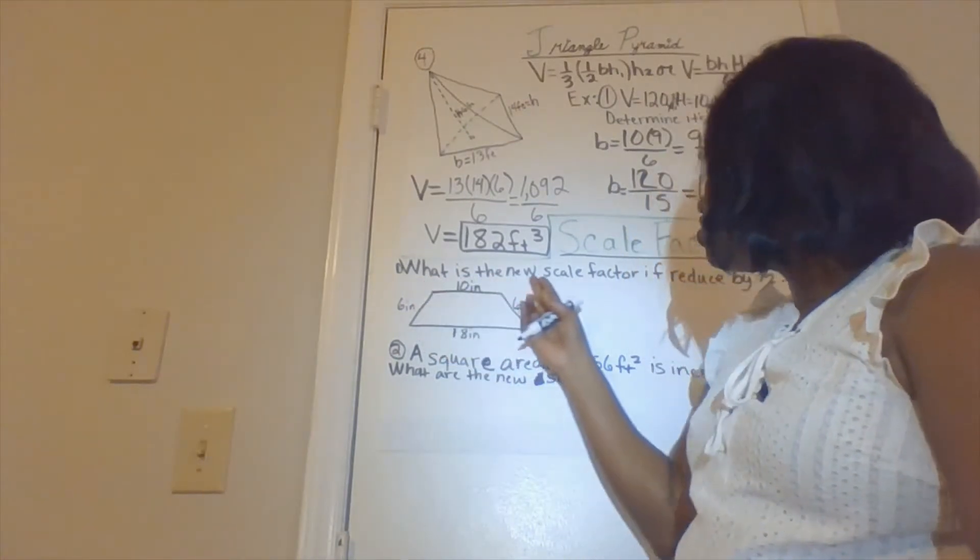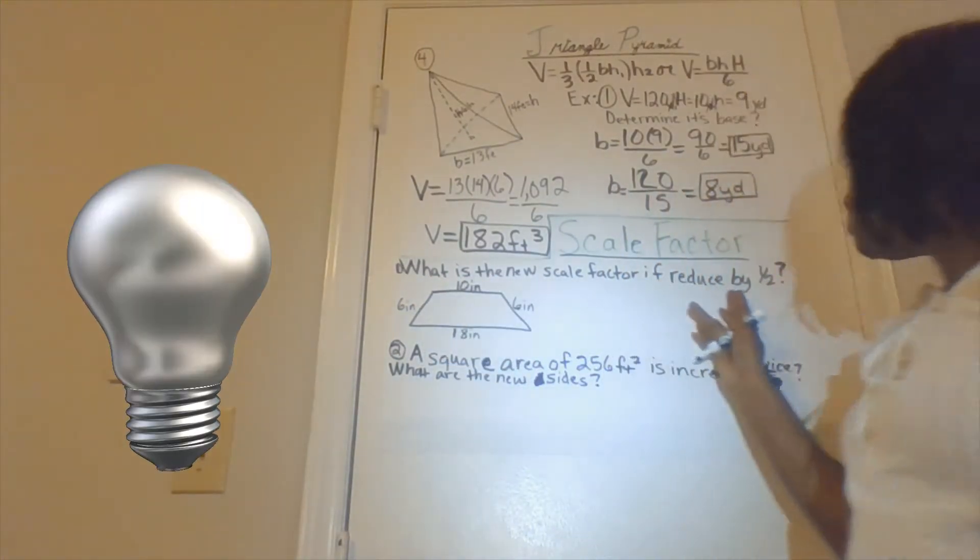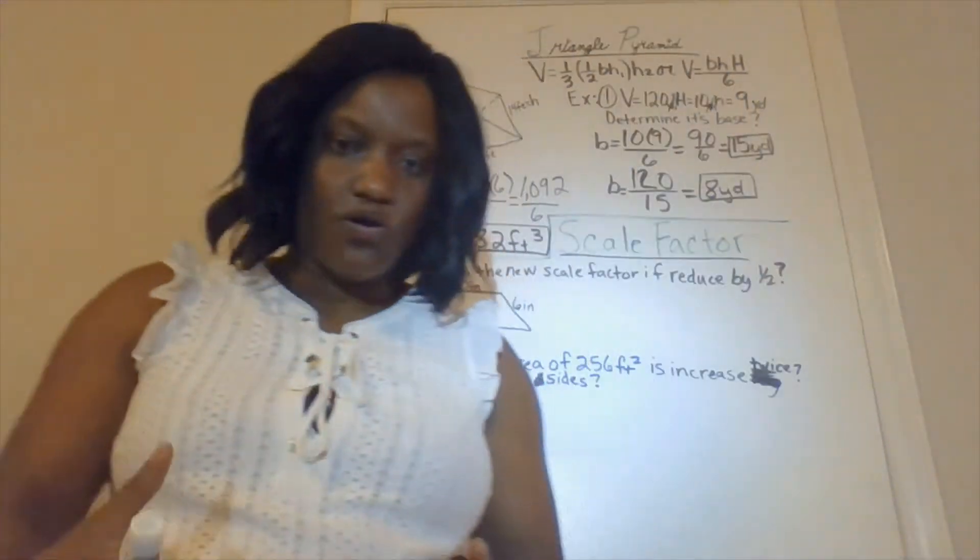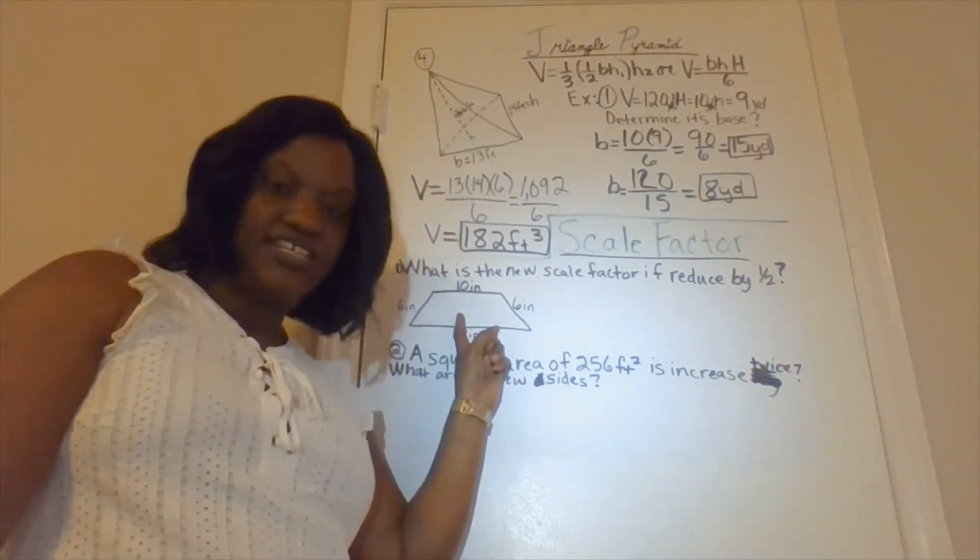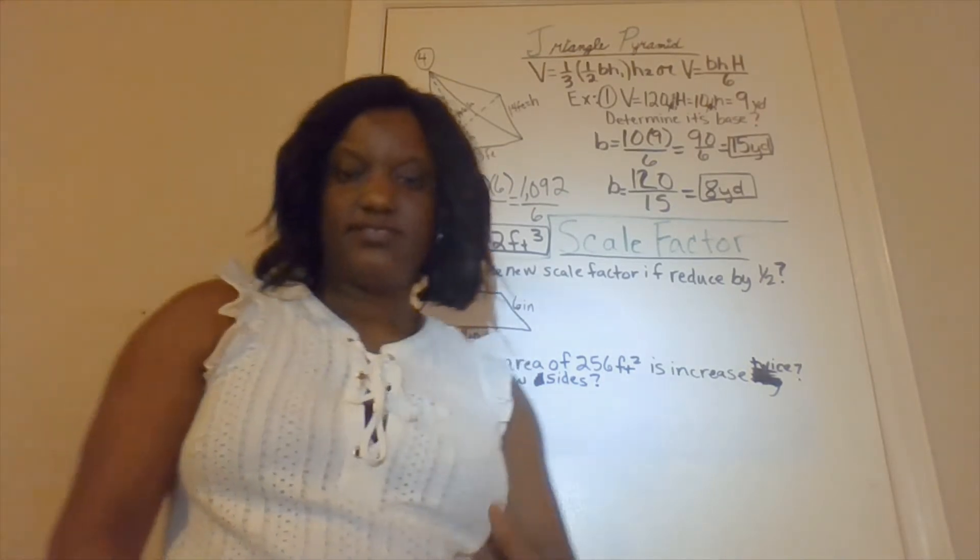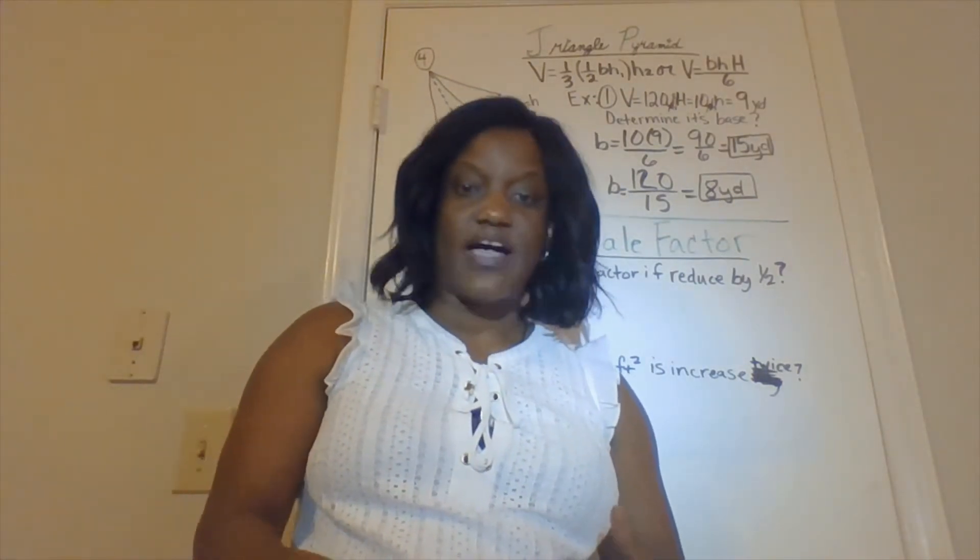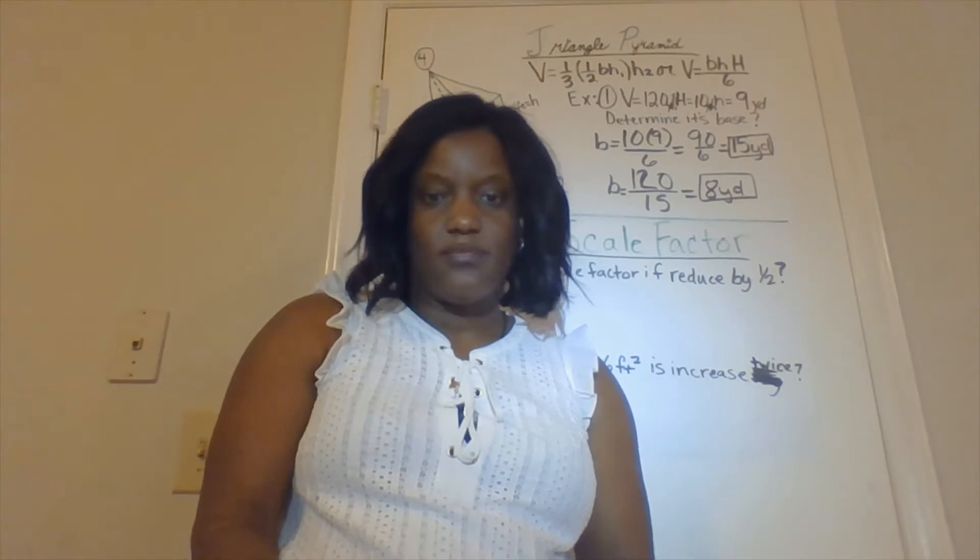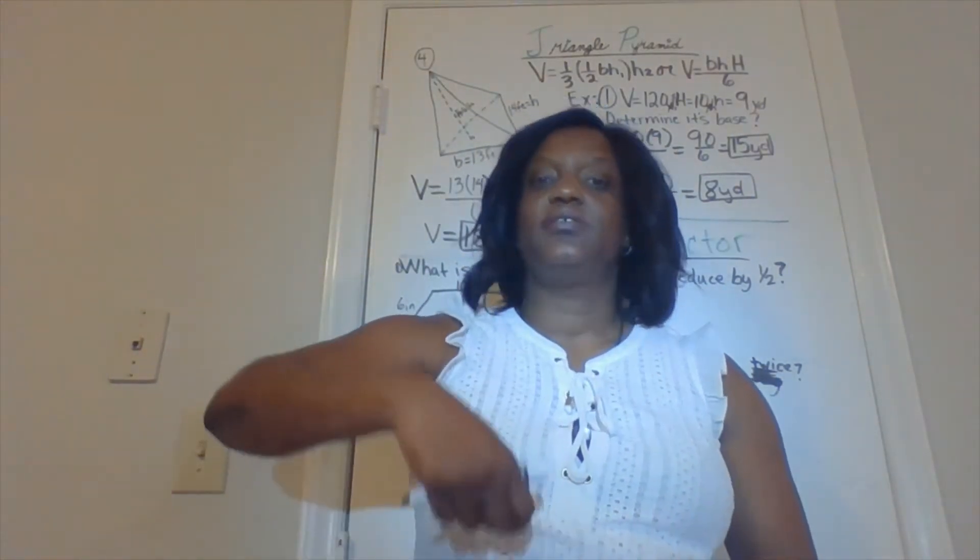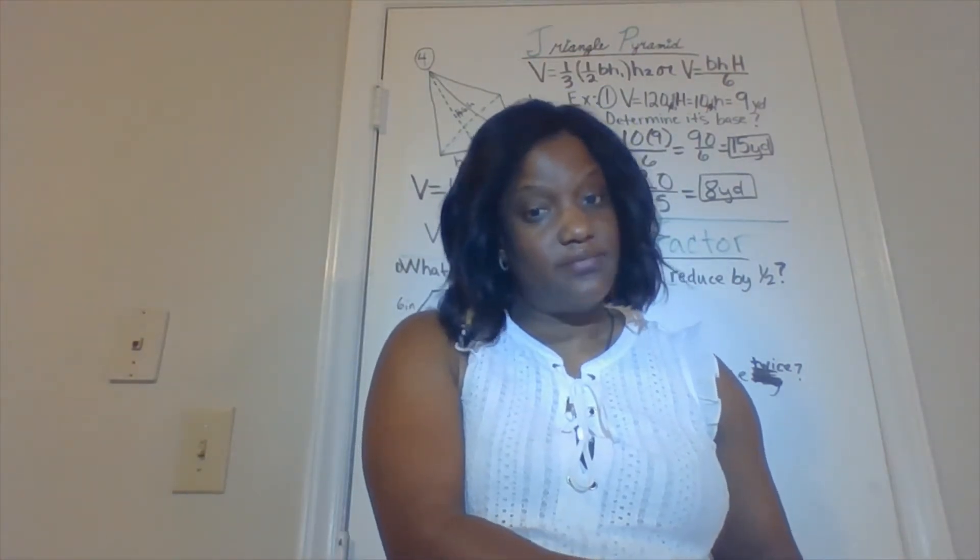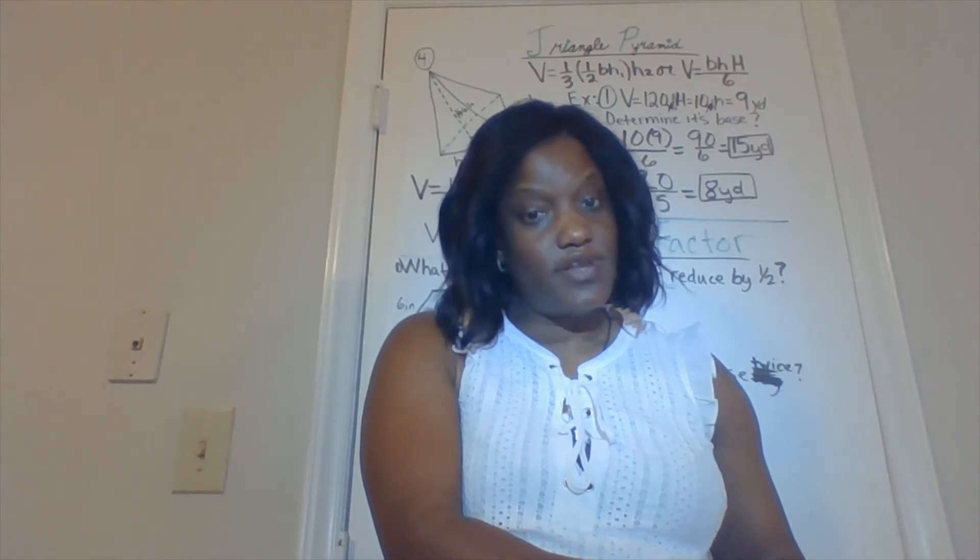Now it says what is the new scale factor if reduced by a half? So if my dimensions are 10, 18, 6, and 6, this is called a trapezoid. So if I reduce each dimension by a half, basically all you're doing if it says reduce, you're dividing. If it says increase, you're multiplying. If it says decrease, you're multiplying.